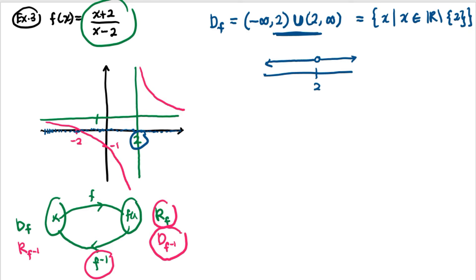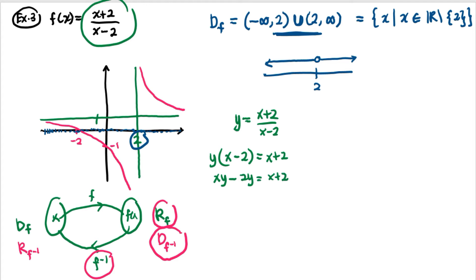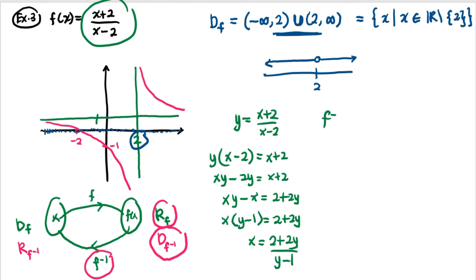Starting with y = (x + 2)/(x - 2), we make x the subject: multiply both sides by (x - 2) to get xy - 2y = x + 2. Rearranging: x(y - 1) = 2 + 2y, so x = (2 + 2y)/(y - 1). Therefore f⁻¹(x) = (2x + 2)/(x - 1).